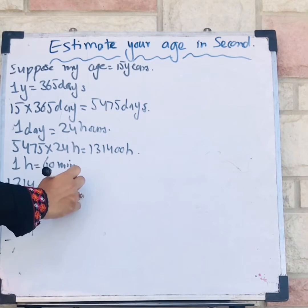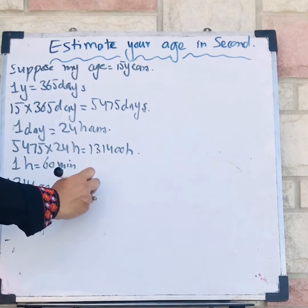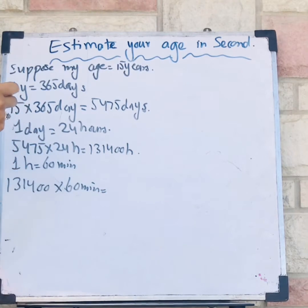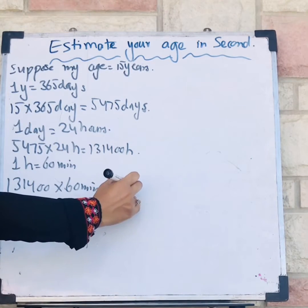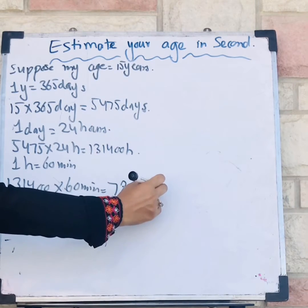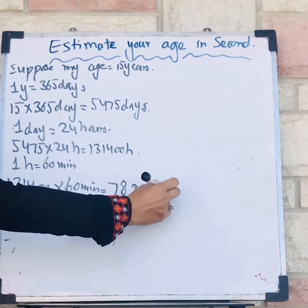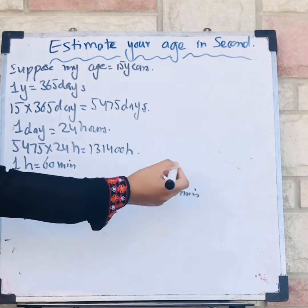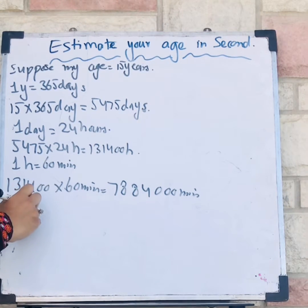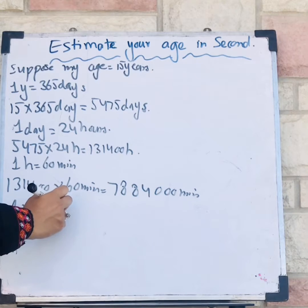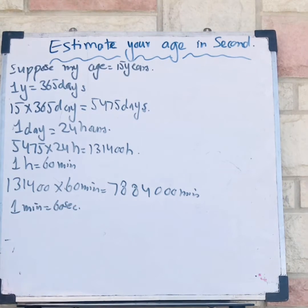After multiplication I get 7,884,000 minutes. One more step: I know that one minute is equal to 60 seconds, and that is my goal — I have to calculate my age in seconds.